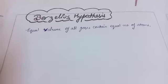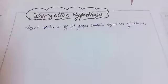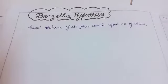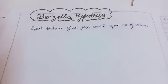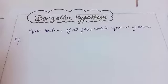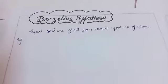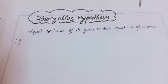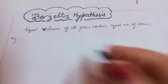According to Berzelius hypothesis: equal volume of all gases contain equal number of atoms, under similar conditions of temperature and pressure. Now, this hypothesis is generally not valid — I'll explain with an example why equal volume of all gases containing equal number of atoms is not possible.